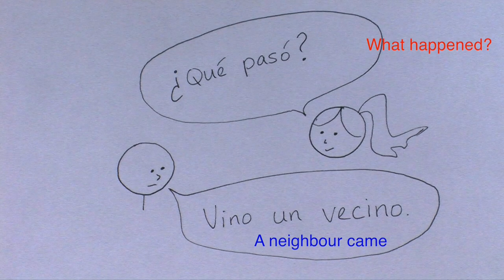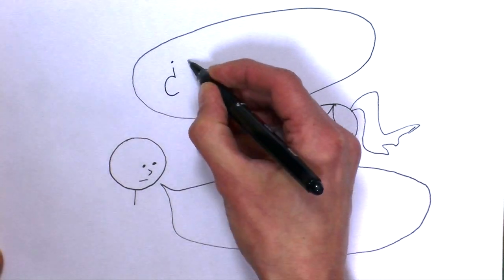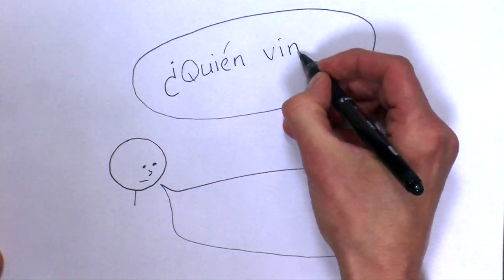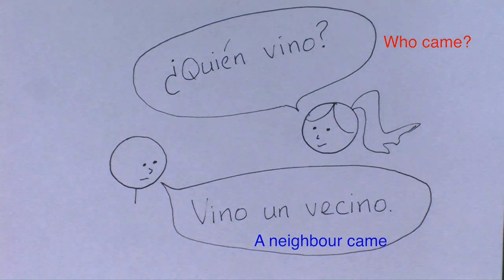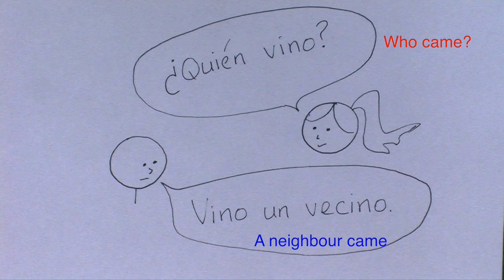Or she asks, ¿Quién vino? Your answer, again, is Vino un vecino. With these verbs, verb-subject order is always preferred regardless of the focus.